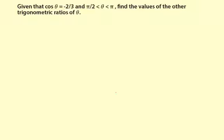Given the cosine of theta is negative two-thirds, and theta is greater than pi over two and less than pi, find the values of the other trigonometric ratios of theta. If theta is between pi over two and pi, it's going to be in quadrant two.